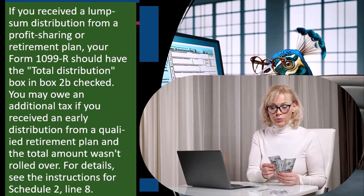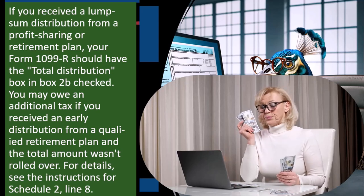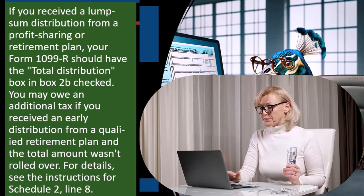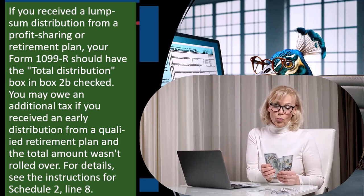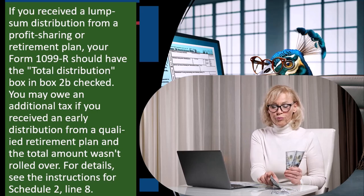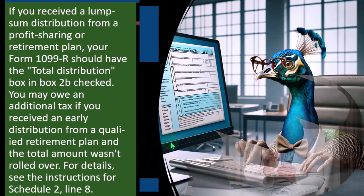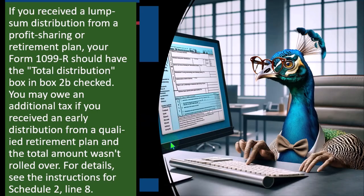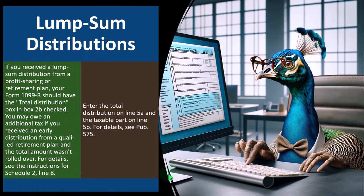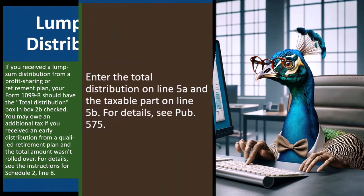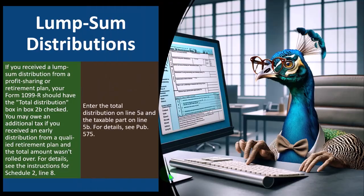That often might happen when people are going from one job to another, in which case you have to be careful. Because if you pull all the money out, you could be subject not only to taxes, but also to the penalties for early withdrawal. For details, see the instructions for Schedule 2, line 8. Enter the total distribution on line 5A and the taxable part on 5B. For more details, see publication 575.